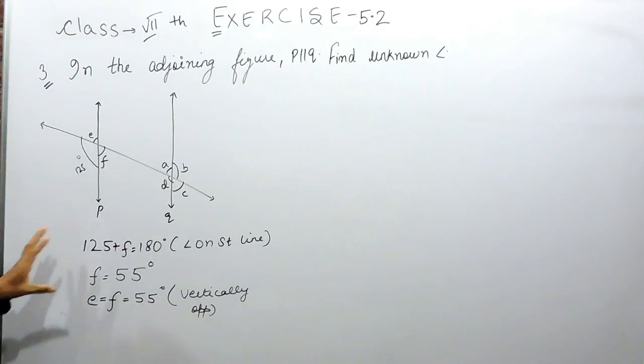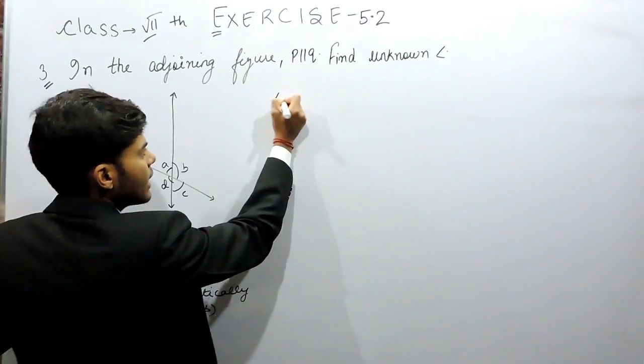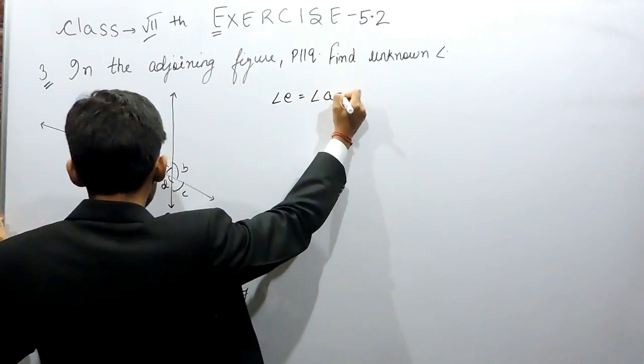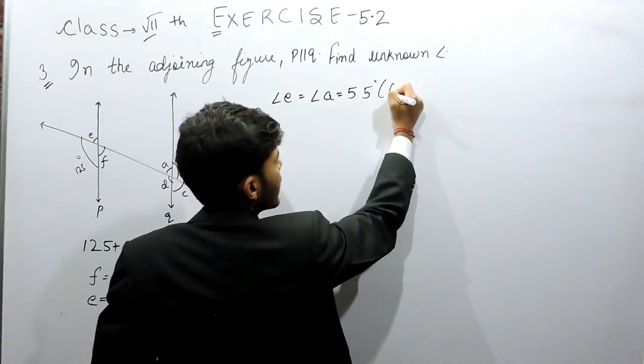Now, if we are following this method, then E is equal to 55 degrees. Now, angle E is equal to angle A, which equals 55 degrees because of corresponding angles.